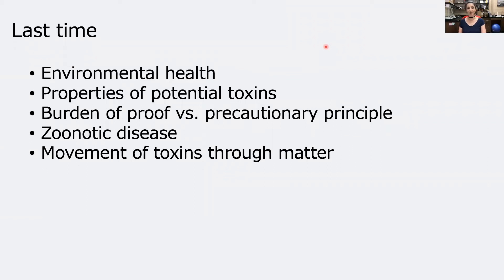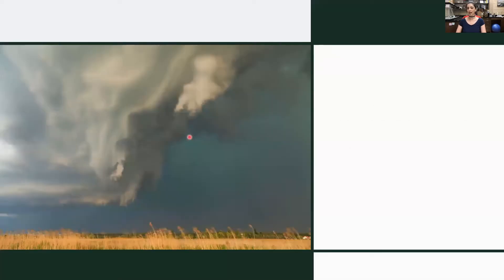Last time we talked about environmental health and ecotoxicology. We discussed potential toxins and their physical properties like solubility, burden of proof versus the precautionary principle, zoonotic disease focusing on COVID-19, and movement of toxins through matter. Today we're going to discuss the atmosphere and climate.